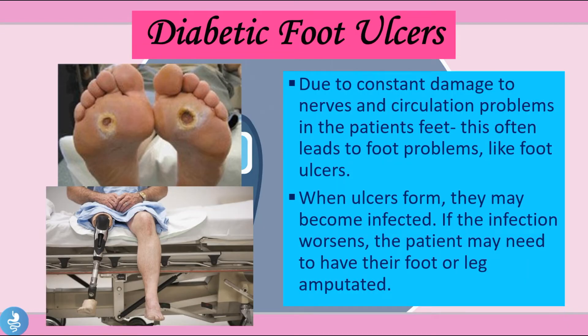The fourth complication is diabetic foot ulcers. Due to constant nerve damage and circulation problems in the patient's feet, this often leads to foot ulcers. When these ulcers form they may become infected, and if the infection worsens the patient may actually have to have their foot or leg amputated — which is why a lot of long-term diabetes patients may even lose a limb.